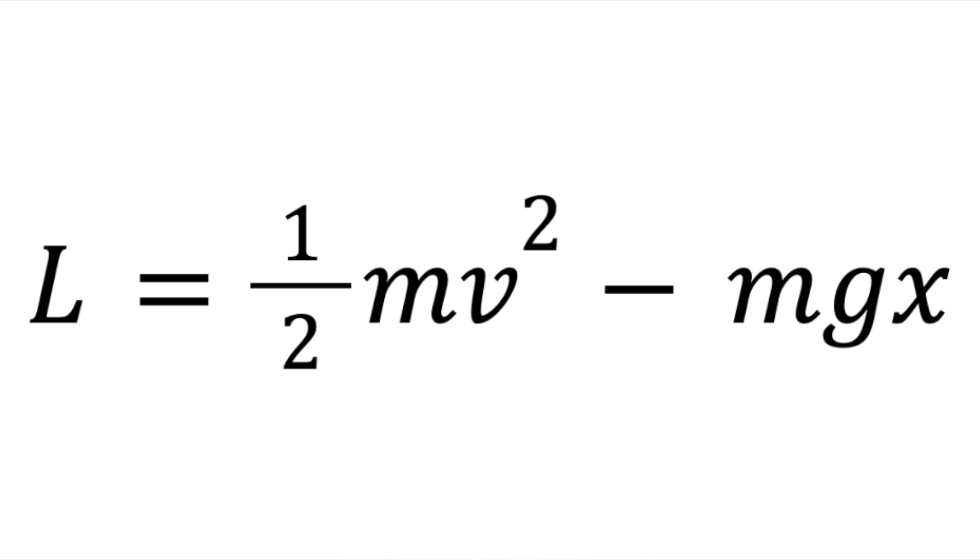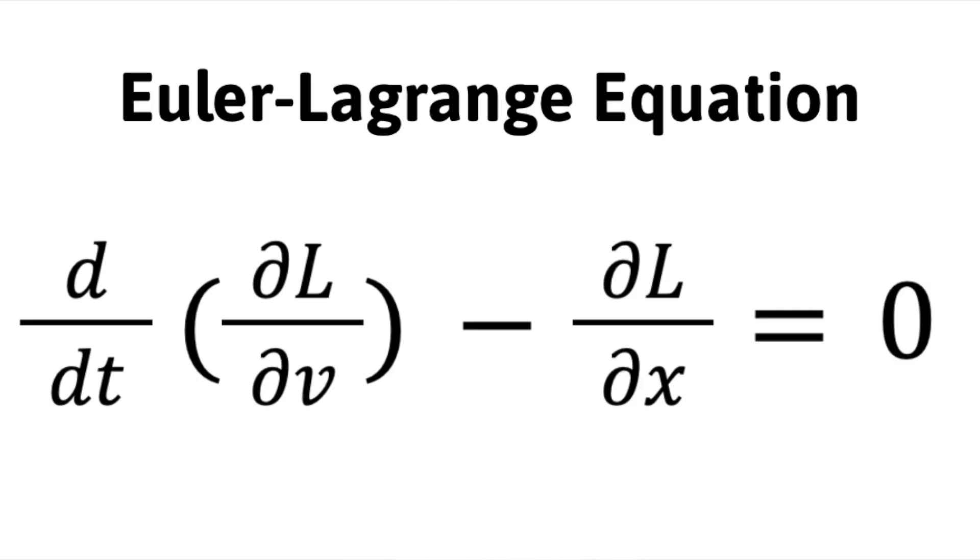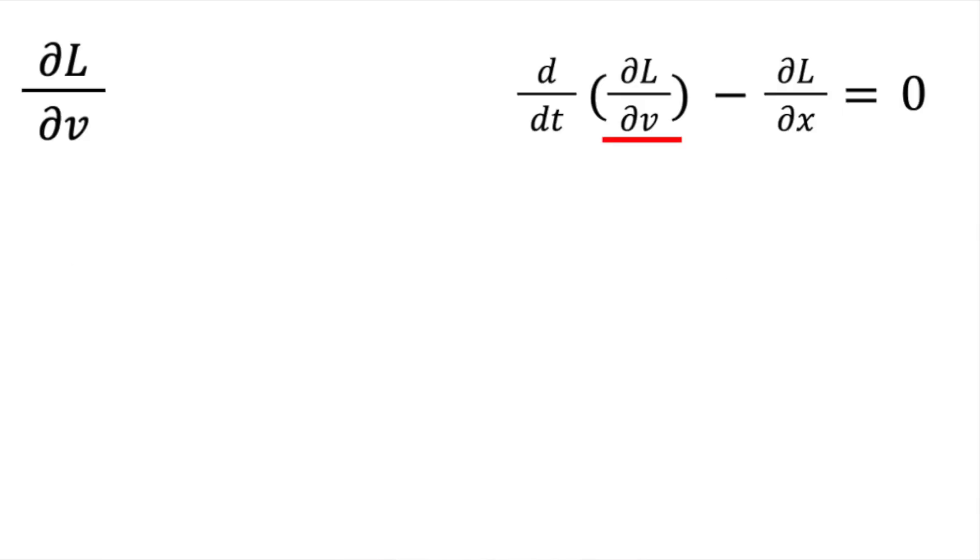Let's first look at the partial derivative of L with respect to v. If you already know how to take derivatives, partial derivatives aren't much harder. You just take the derivative with respect to one variable and assume all other variables are constant.